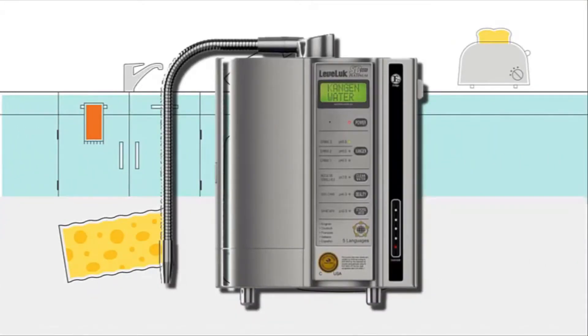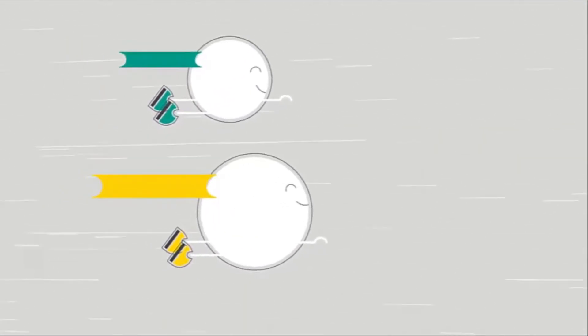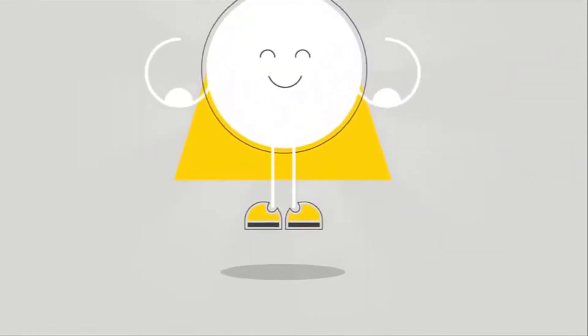Now here comes the fun part. When you push the Kangen machine 2.5 button, it sends an electrical current through the solution that breaks apart the molecules and scrambles up the elements to form two new power molecules.